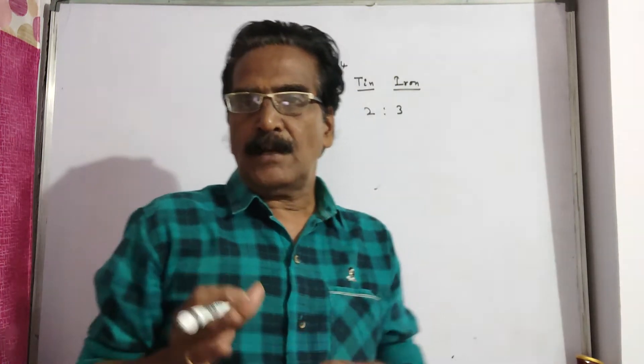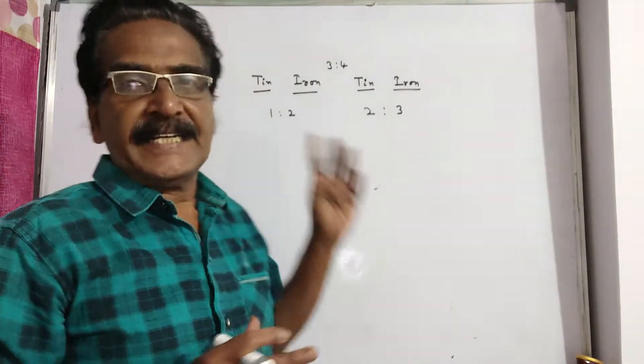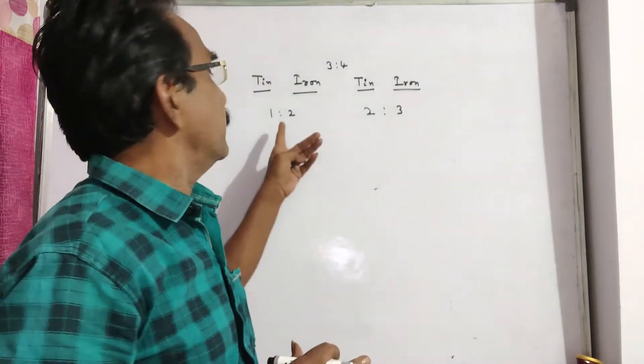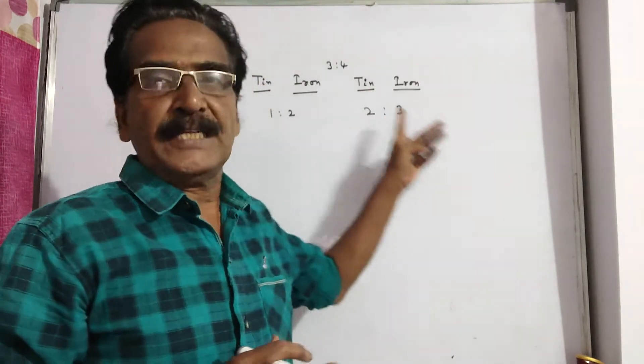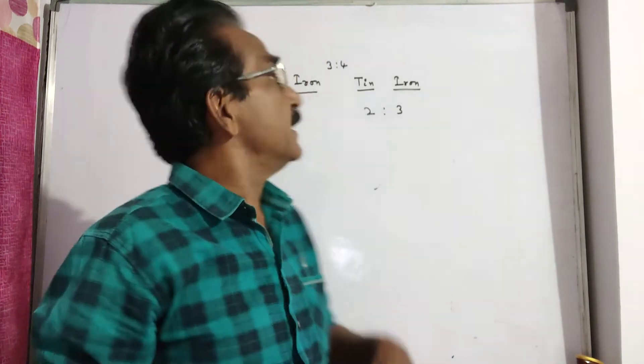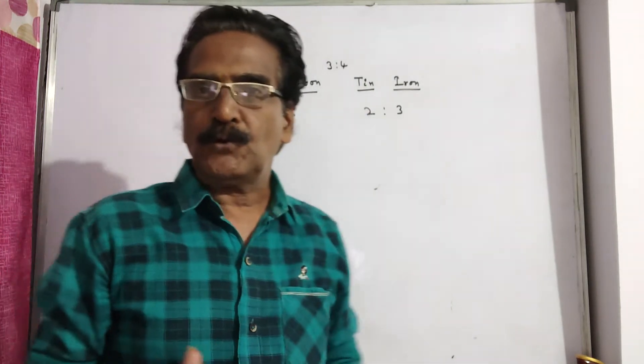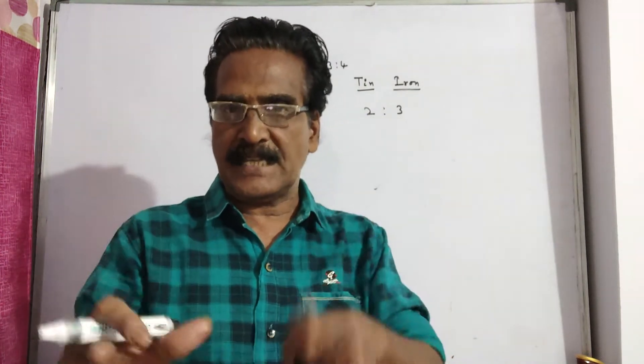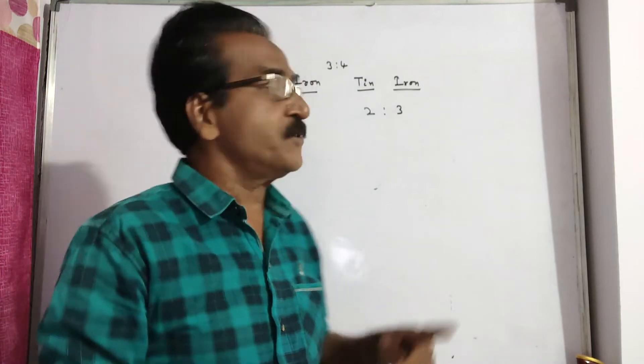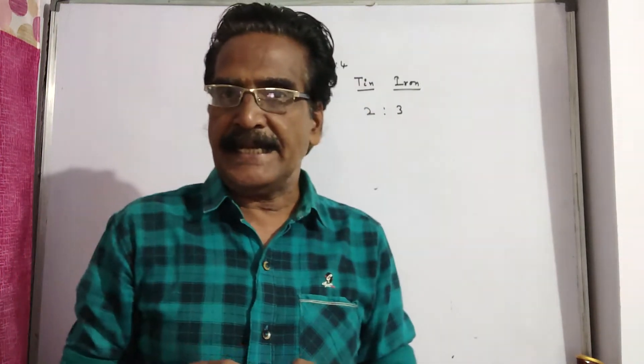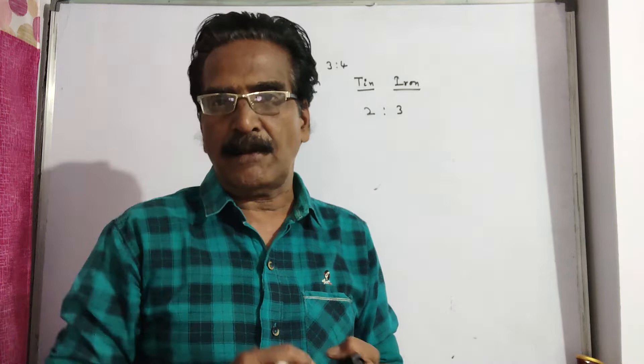Friends, two alloys contain tin and iron in the ratio 1 is to 2 and 2 is to 3 respectively. Now these two alloys are mixed in the ratio 3 is to 4 to form a third alloy C. Then what is the ratio of tin and iron in the third alloy C?